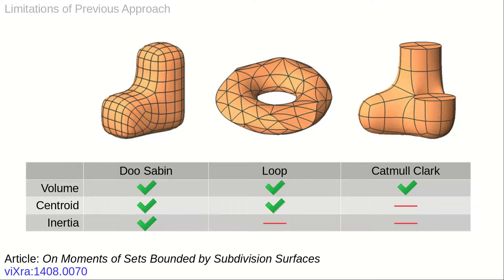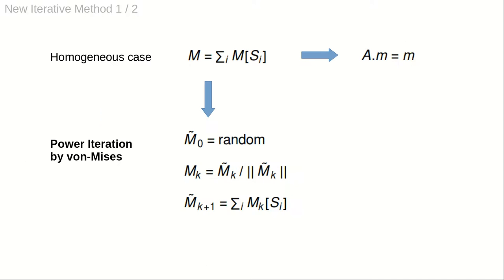Next, we present the two iterative methods that yield accurate solutions for those and many more applications. In the homogeneous refinement case, the search for the eigenvector is carried out by the power iteration method, originally conceived by von Mises.